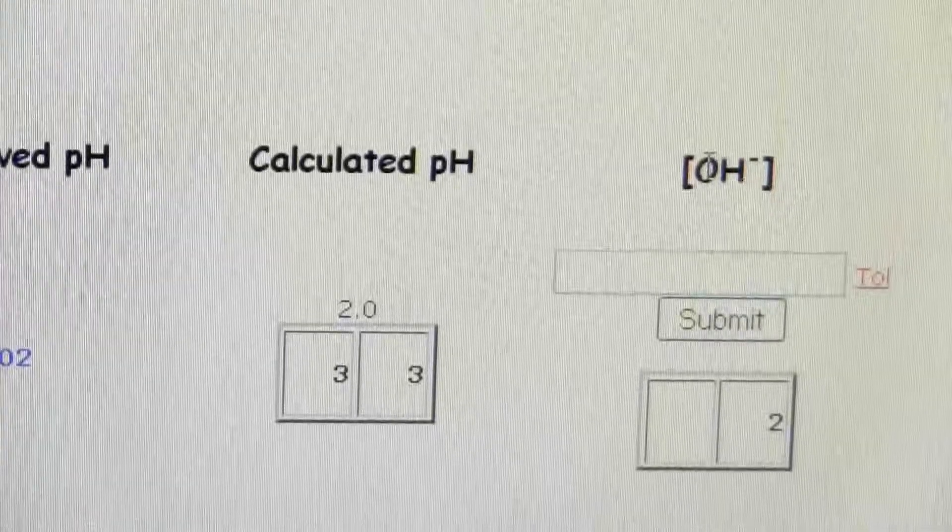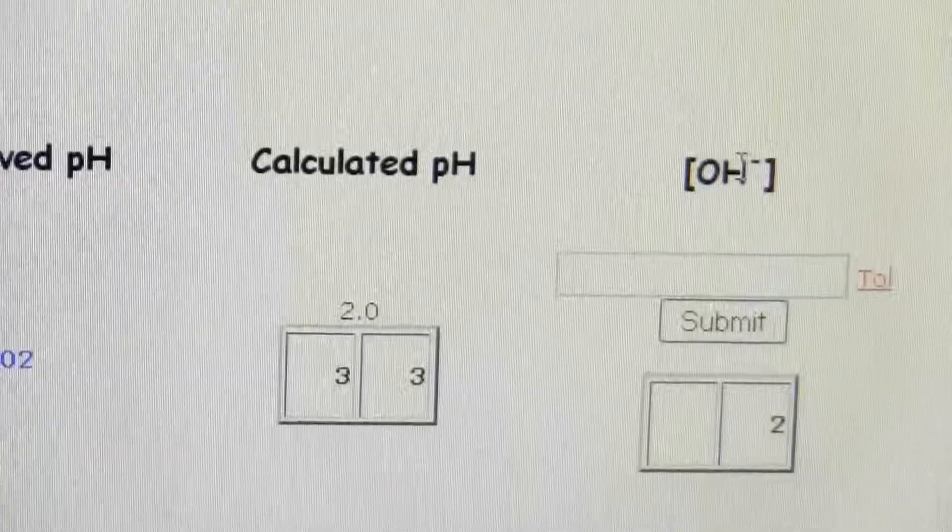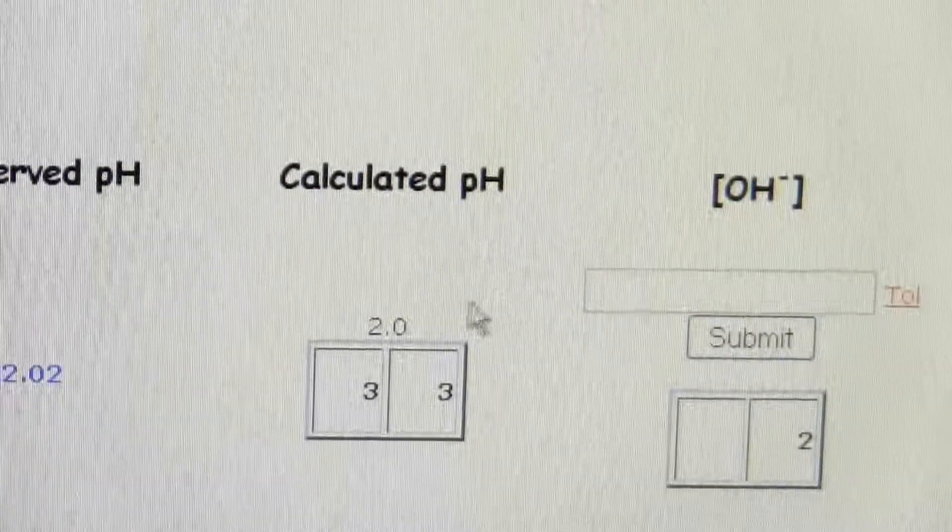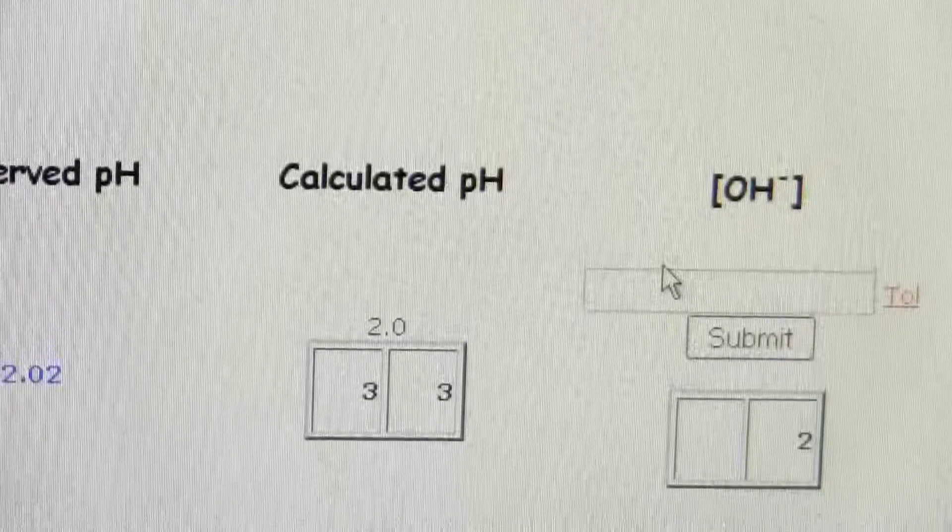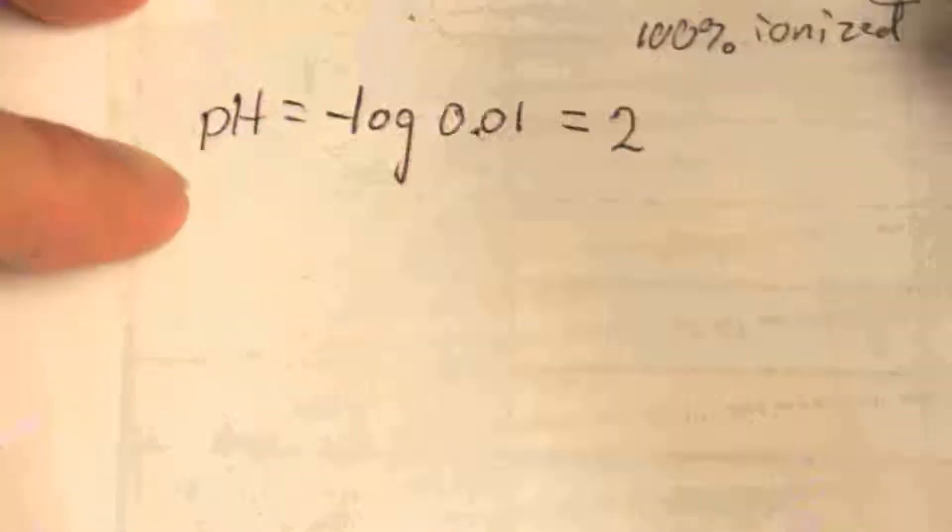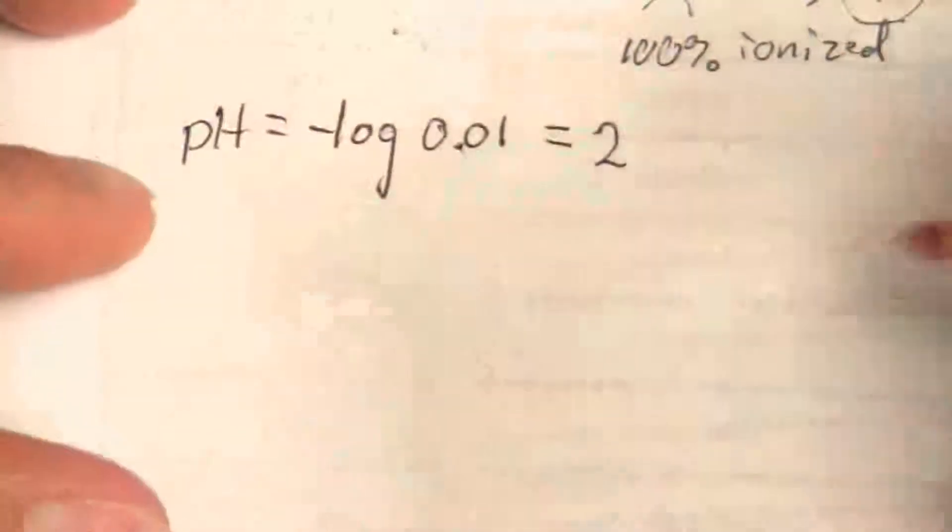So the molarity of the hydroxide ion concentration is what it's asking me for here based on my calculated pH. So to do that, we need to do a little calculation. We have the pH, but we need to get to the hydroxide ion concentration.